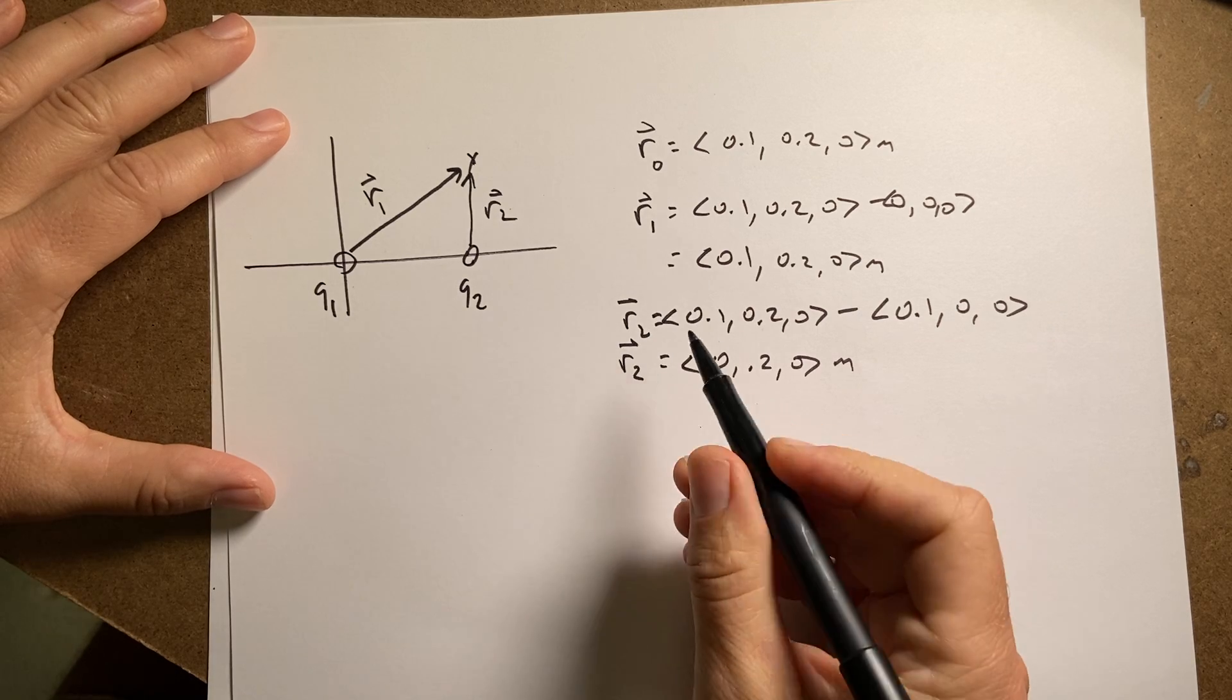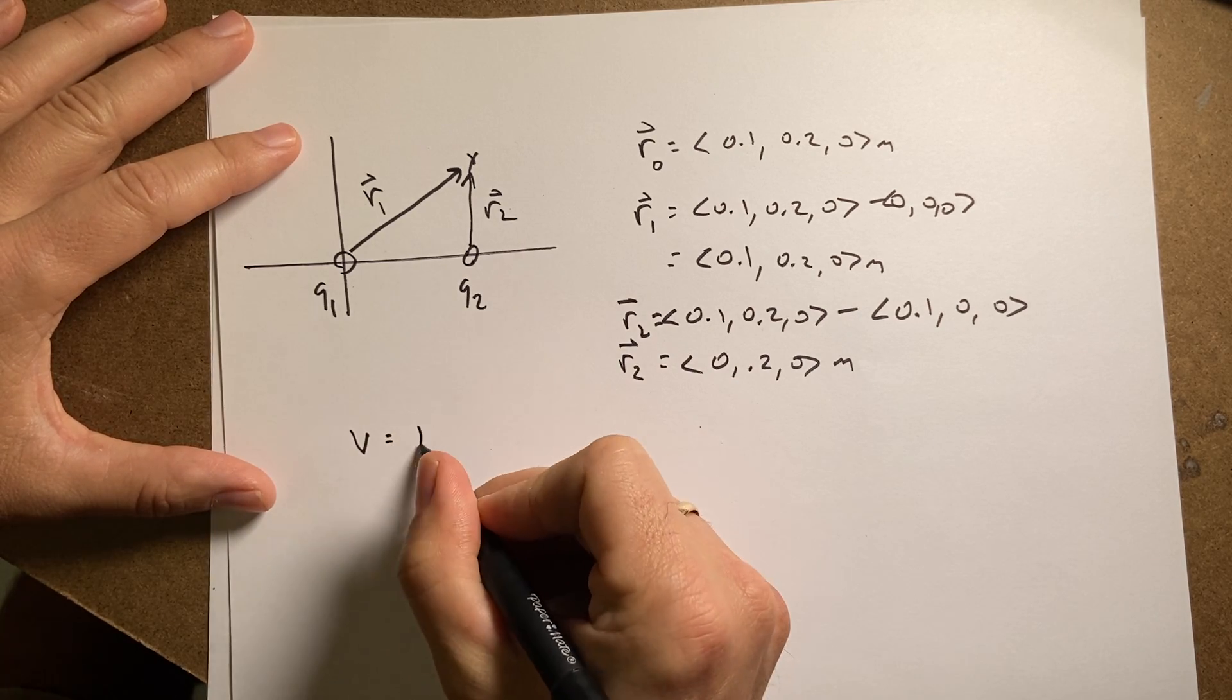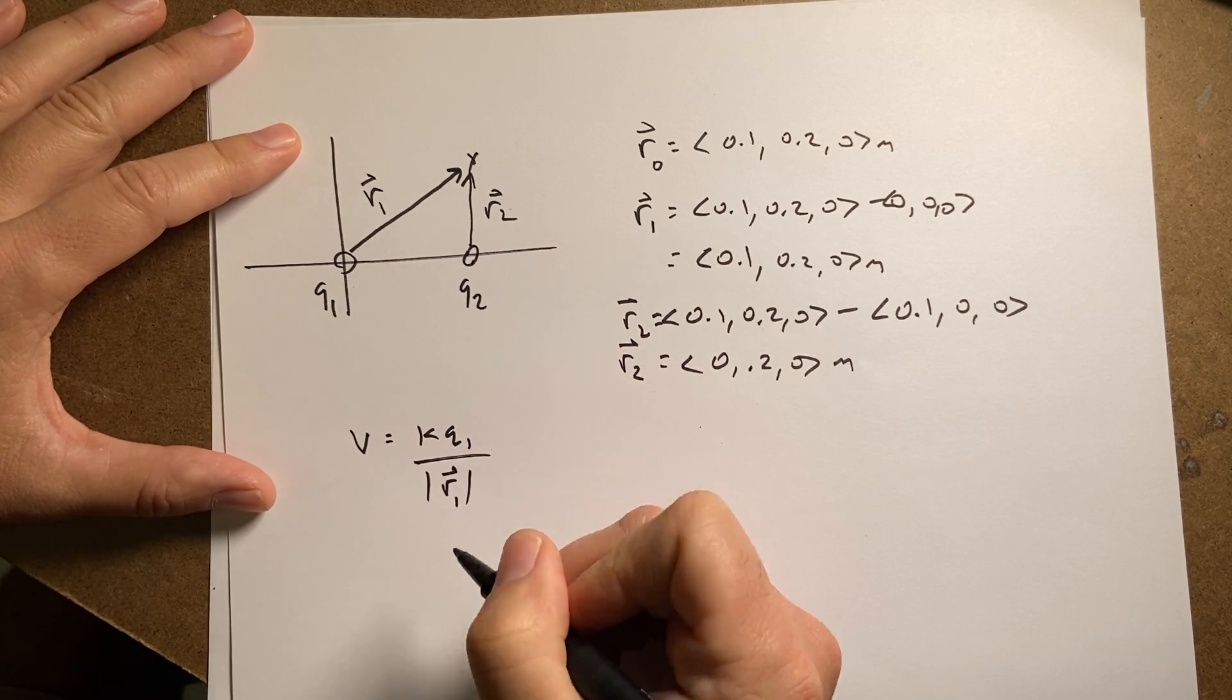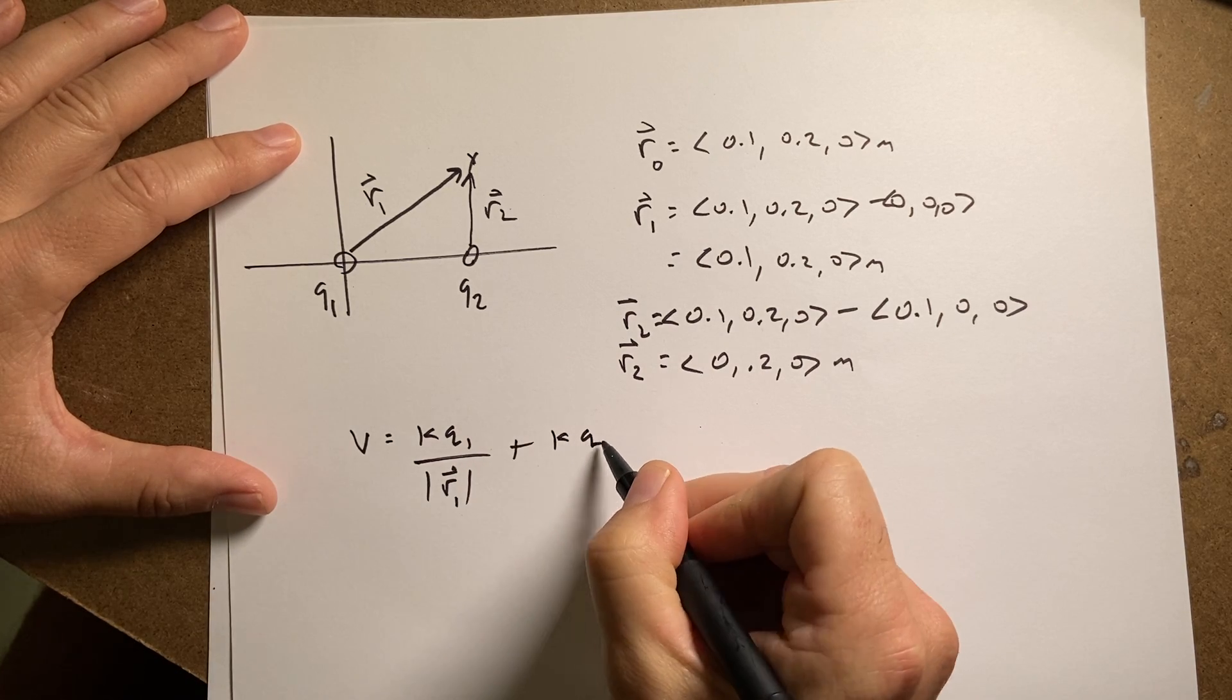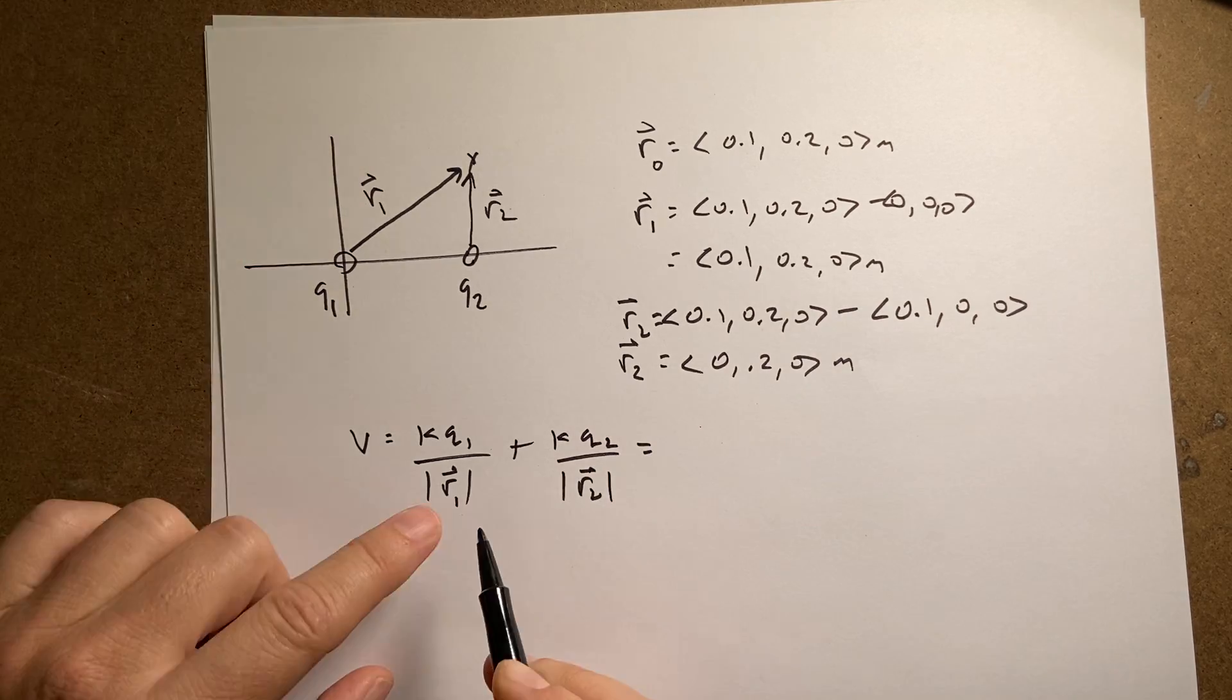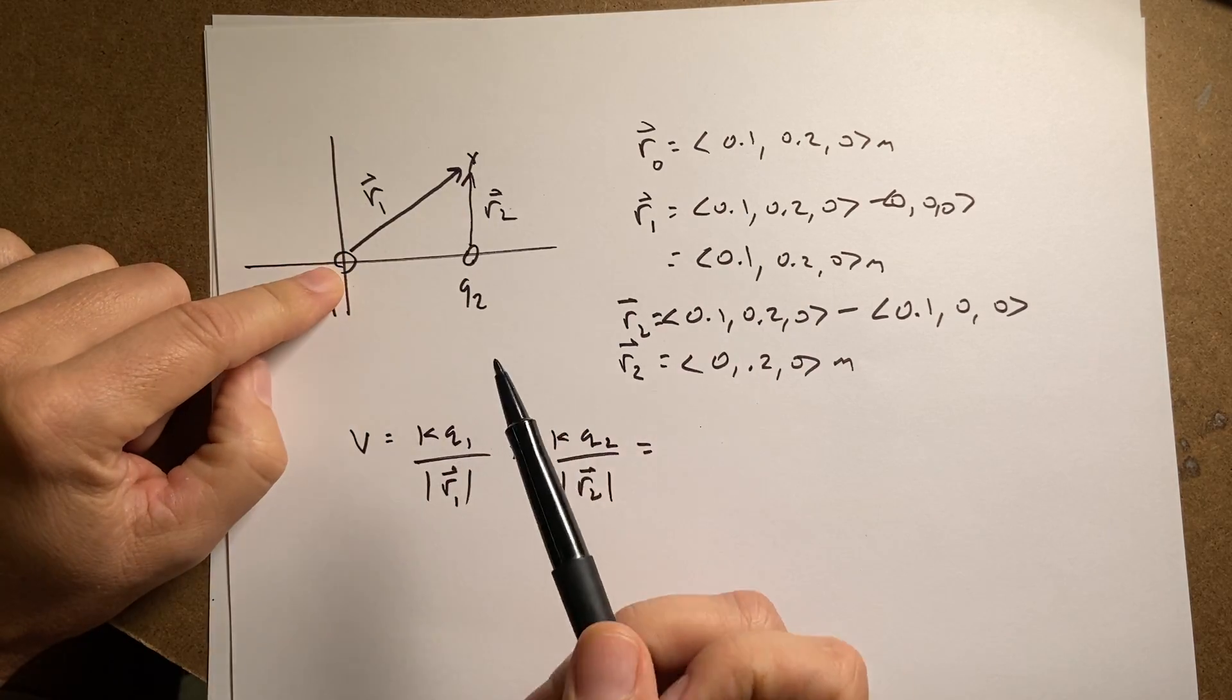So now I need to find the magnitude of these vectors and I can say V equals KQ1 over the magnitude of R1. See how I've kind of made this into a program, right? Plus K times Q2 over the magnitude of R2. And now all I have to do is do this vector math.